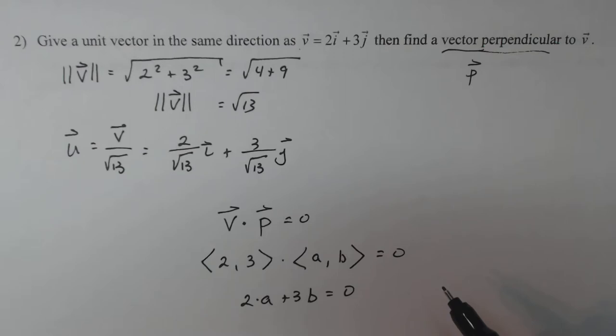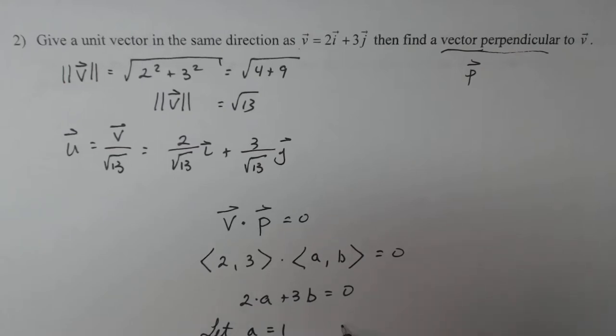I just have to think of something that would work really nice. So for ease, I'm going to let A equal 1. And let's see what B turns out to be. So if I let A equal 1, I get 2 times 1 plus 3B equals 0. So 3B equals negative 2, so B has to be negative 2/3.